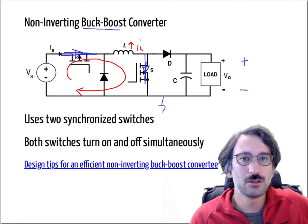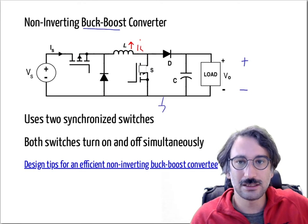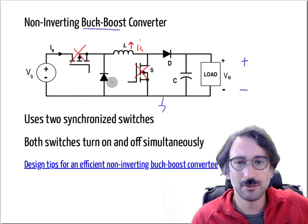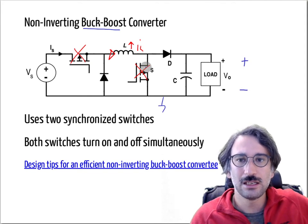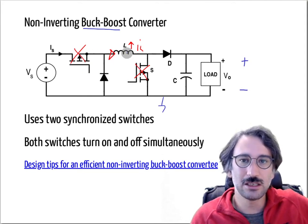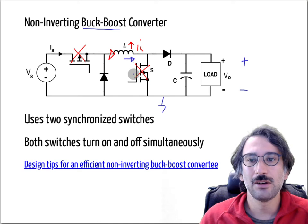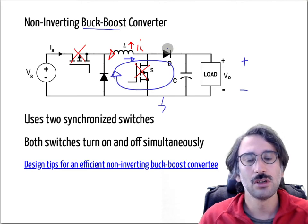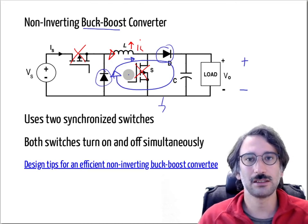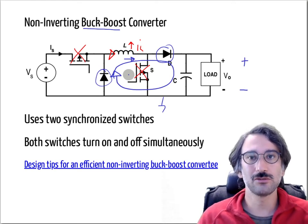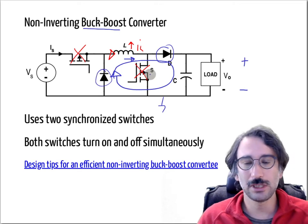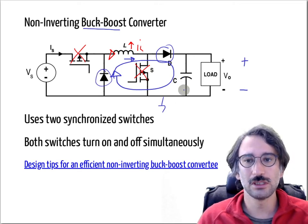Once the inductor current has reached some level, we turn off both switches. Now the current has only one way to flow — through the diodes to charge the capacitor. As you can see, the current is flowing through two series-connected diodes, so you will have twice the conduction losses in the diode path as well.